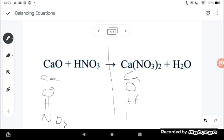Ca, O, H, and NO₃. Let's add them up. I've got one calcium, I've got one oxygen, I've got one hydrogen, I've got one nitrate. Over here, one calcium, two nitrates, two hydrogens, one oxygen.